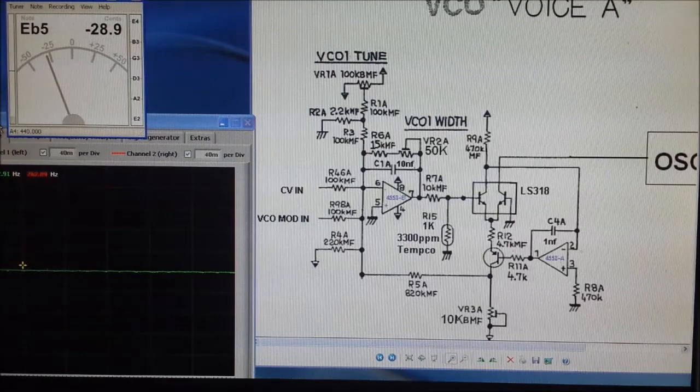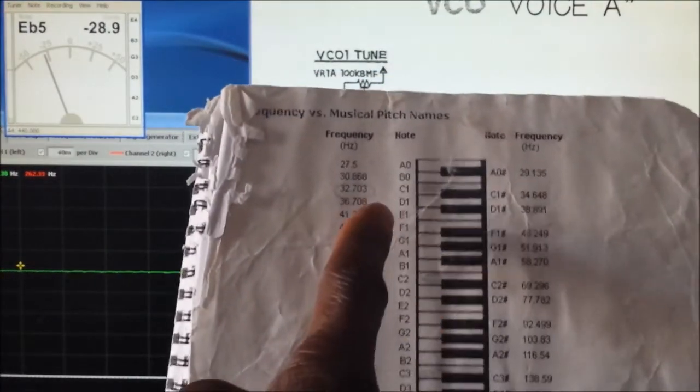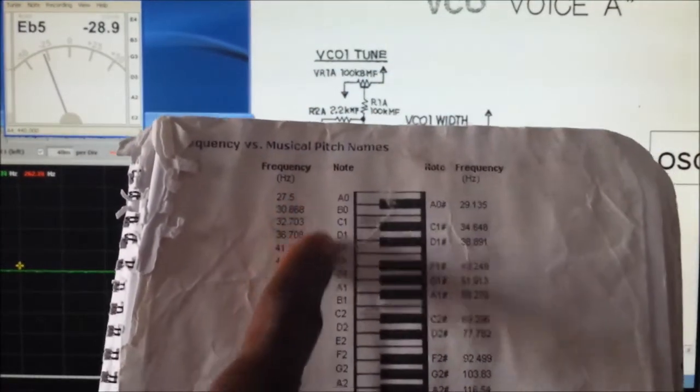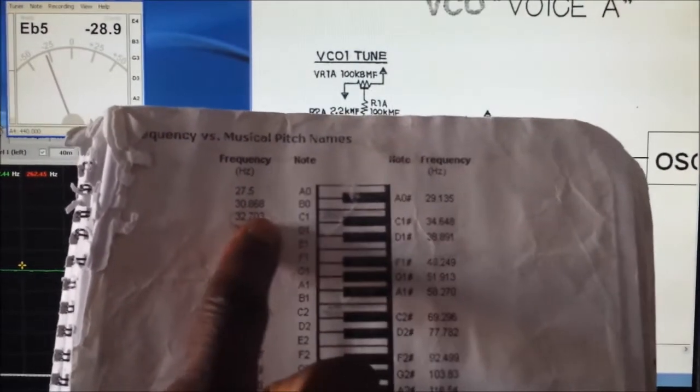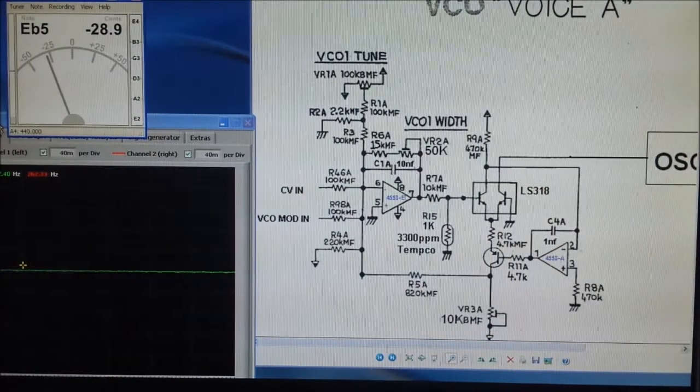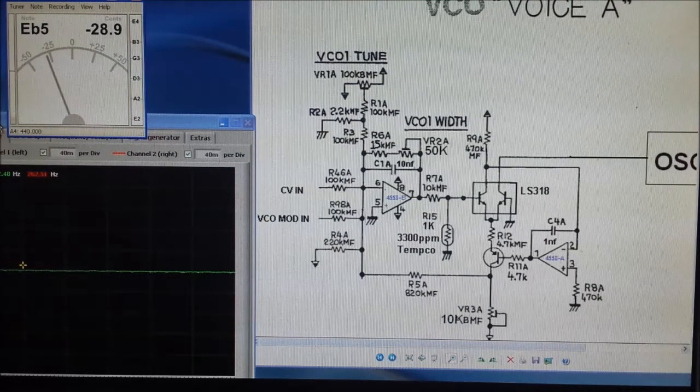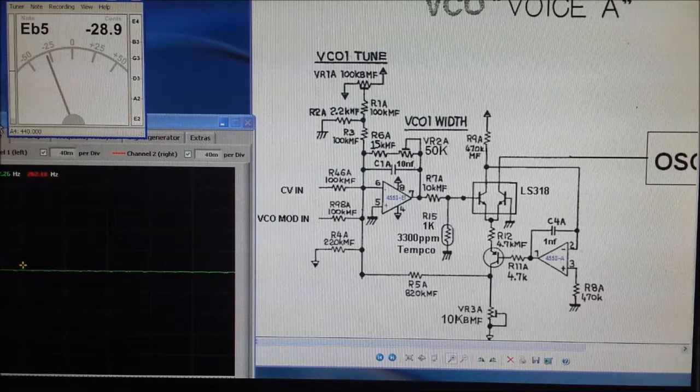So what I have here is a chart which shows me frequencies versus the musical notes. I'm going to go into the keys of C's, so I want my C3 to be roughly about 130 hertz. I'm going to find the C3 on my controller keyboard.